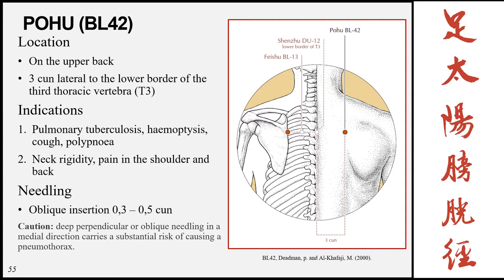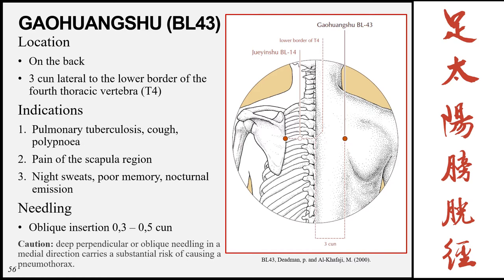The next point is Pohu, Bladder 42, located on the upper back three cun lateral to the lower border of the third thoracic vertebra. To locate these points we first find C6 and C7, then count downwards to T1, T2, and T3, then go three cun lateral to the spinous process. Indications include pulmonary tuberculosis, hemoptysis, cough, polypnea, and local functions such as neck rigidity and pain in the shoulder and back. Needling is oblique insertion 0.3 to 0.5 cun with caution against deep perpendicular or medially oblique needling due to risk of puncturing the lungs.